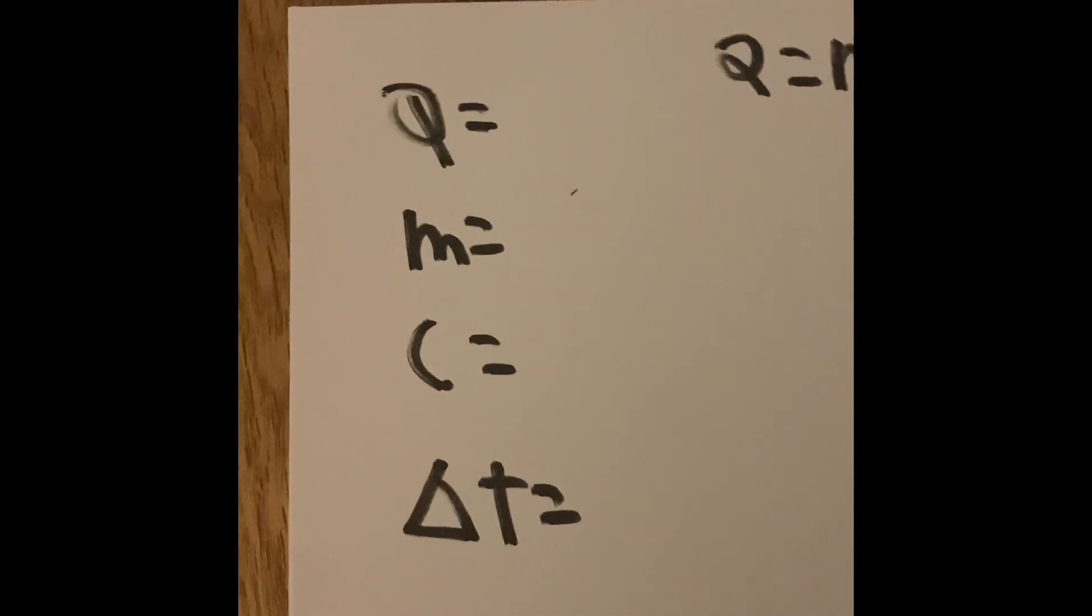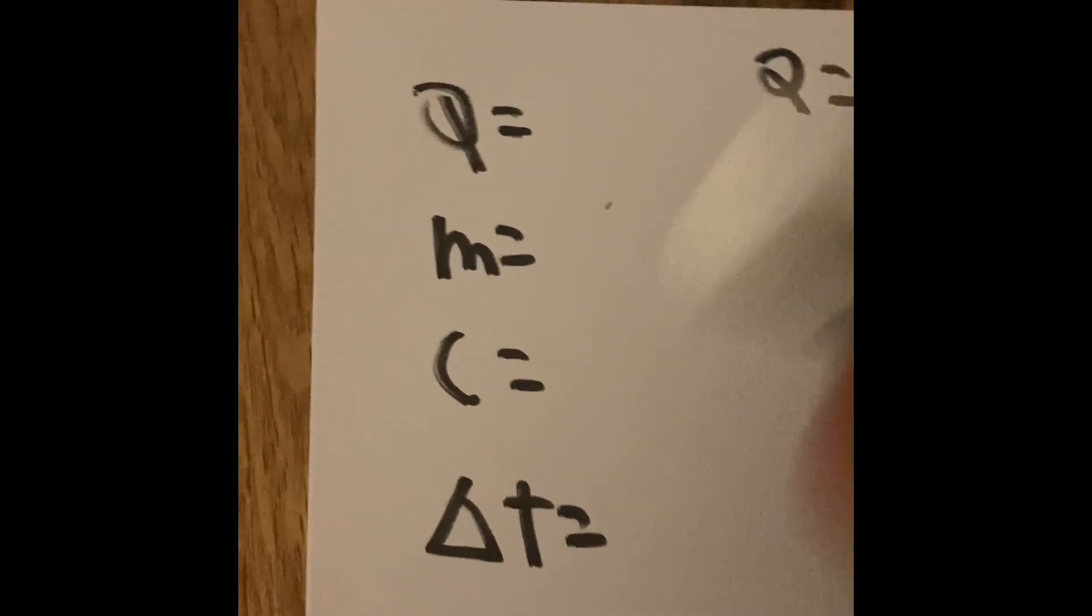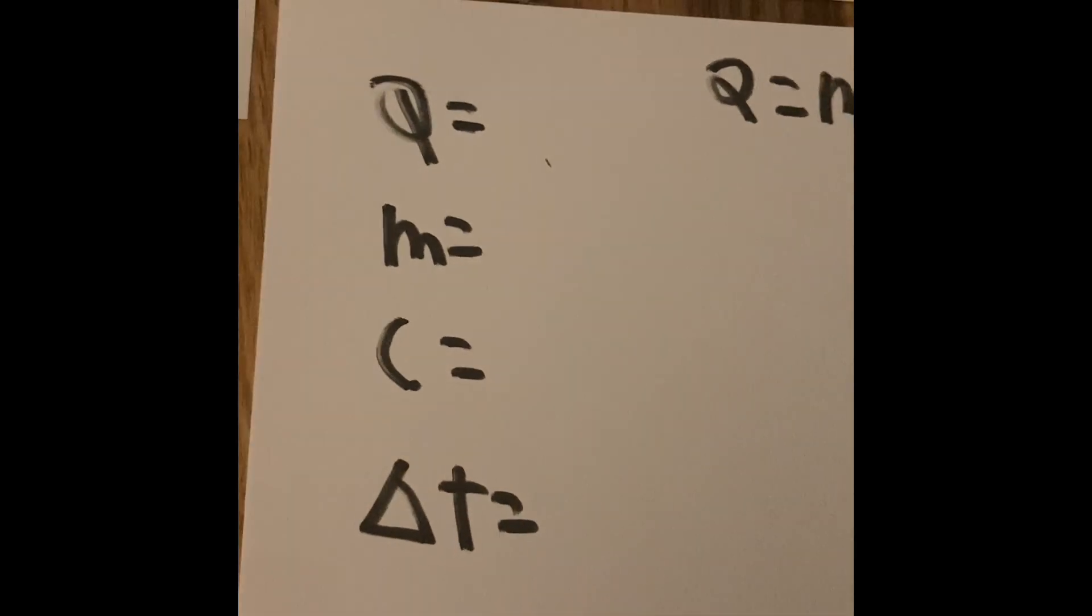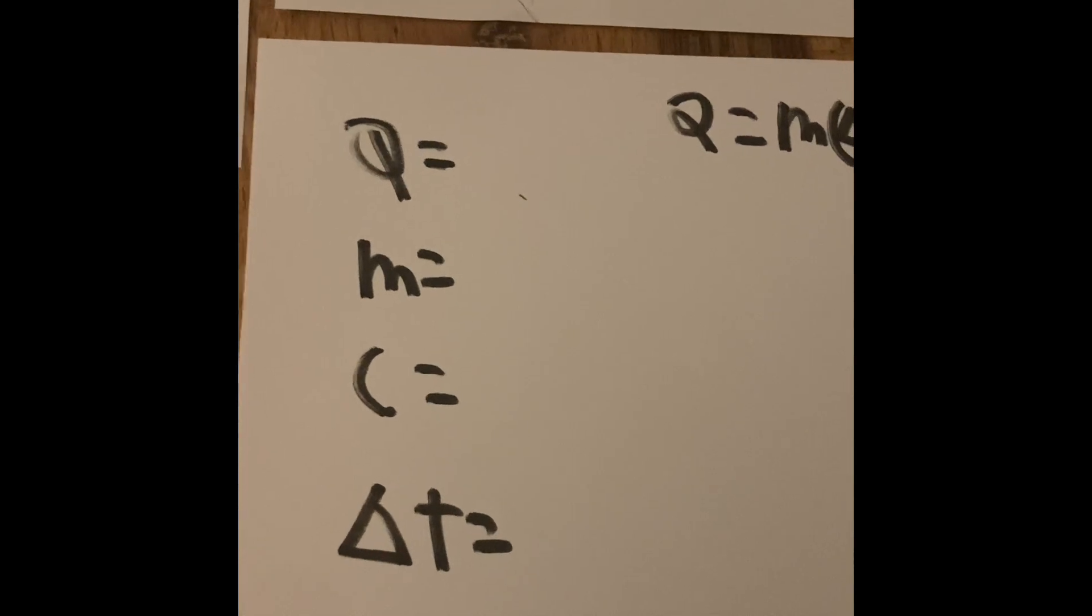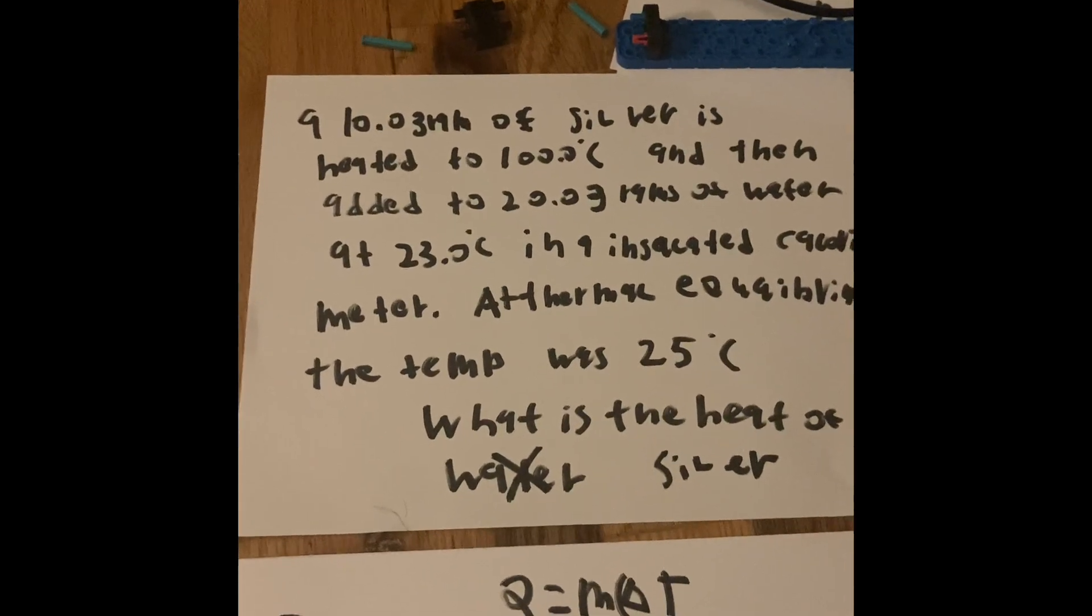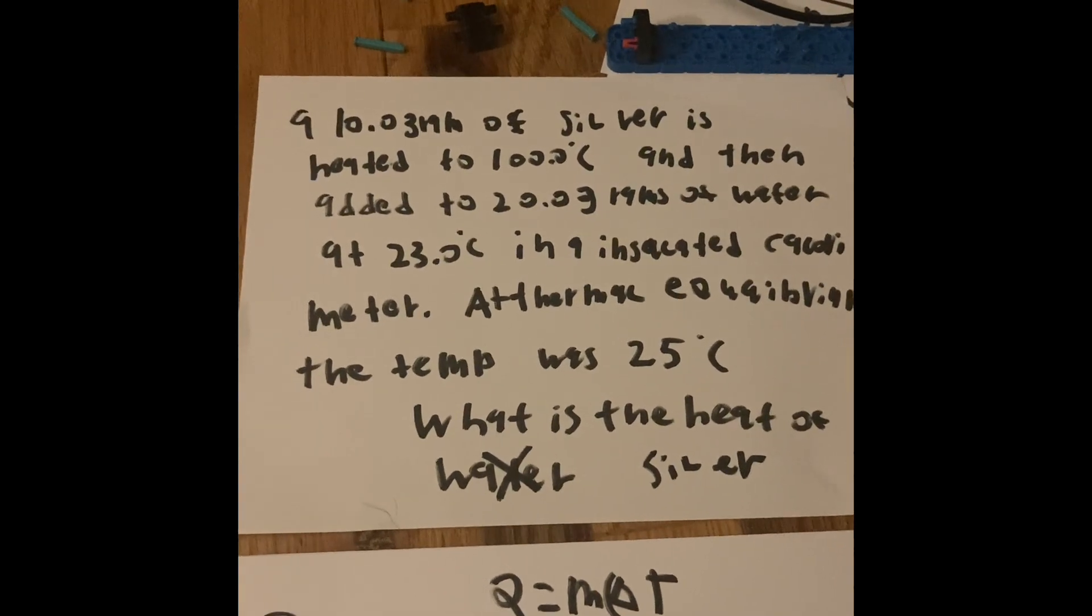That is basically what we're going to find: the joules of energy, the mass of the object, the specific heat, and the change in heat. The two things is we have to calculate water, and we also have to calculate the heat of the silver cube.